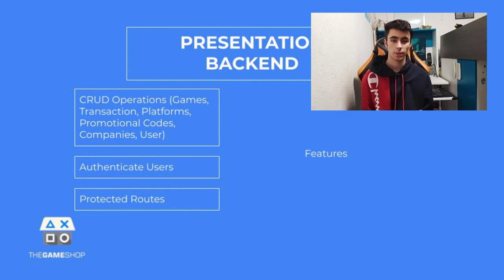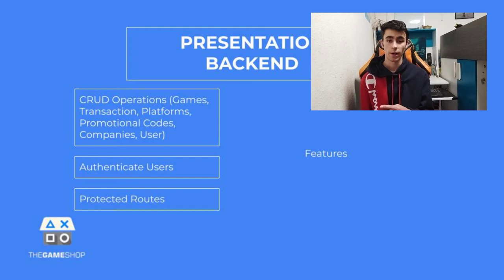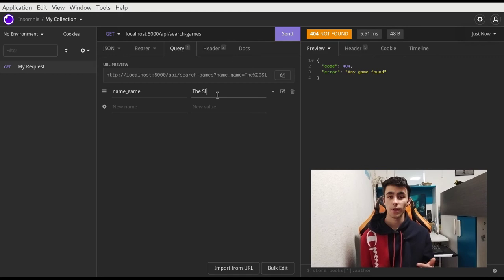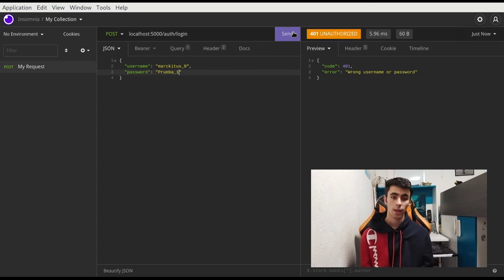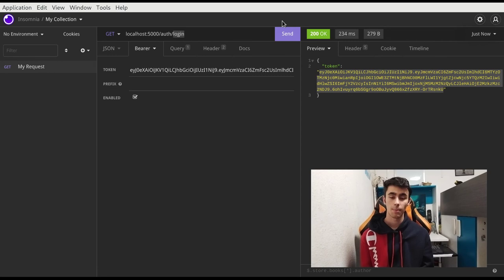I also authenticate the users. In other words, when a user inputs their username and password, I validate if it is correct, and if it is, I return a token to the frontend. The frontend can consume this token to identify the user. Some routes are protected by their nature — for example, if a user makes a transaction, I need to know if the user has money. If they do, I can make the transaction; if not, I cannot make any transactions.